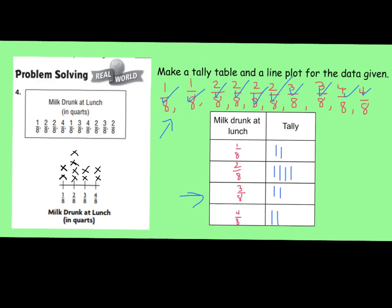Looking at this line plot, you can answer many questions. For example, how many students were surveyed? I can count up my X's: 1, 2, 3, 4, 5, 6, 7, 8, 9, 10 students were surveyed. That also matches the data in my survey. I can also answer, what's the difference between the milk that was drank at lunch? The difference would be 4/8 minus 1/8, so the difference would be 3/8, from the largest to the smallest amount. There are many different questions you can answer from a line plot.